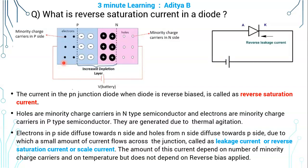This current is very small because it is due to the movement of minority charge carriers. As the minority charge carriers are very less in number, the magnitude of this current is very less.